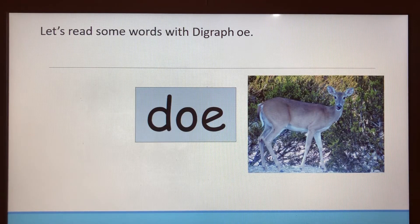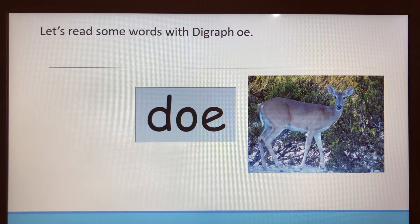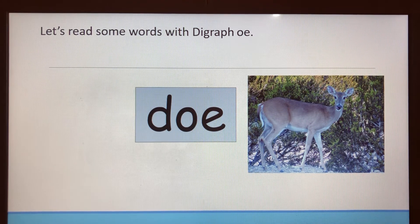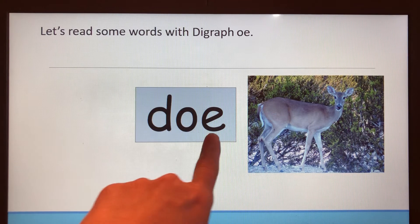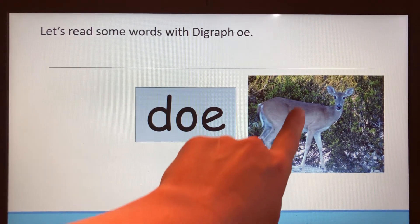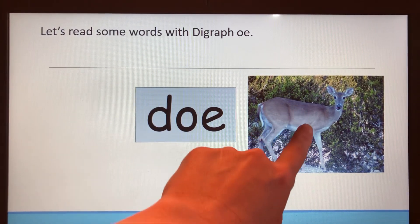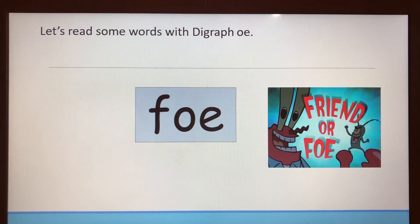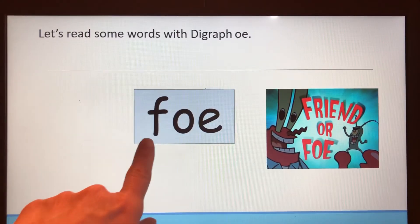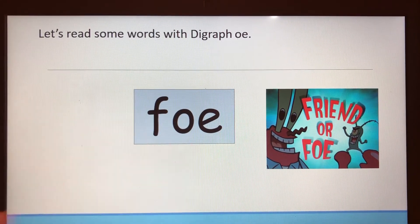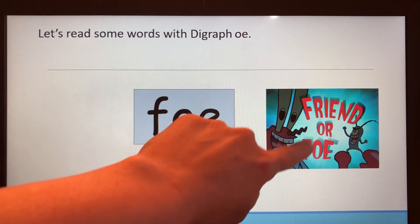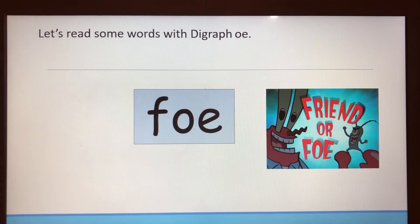Now we're going to read some words with digraph OE. Here we have the word doe. You know that a doe is the female deer. This is the word foe, and the picture says friend or foe. A foe can be like an enemy.